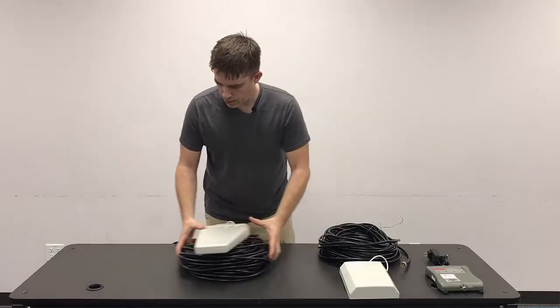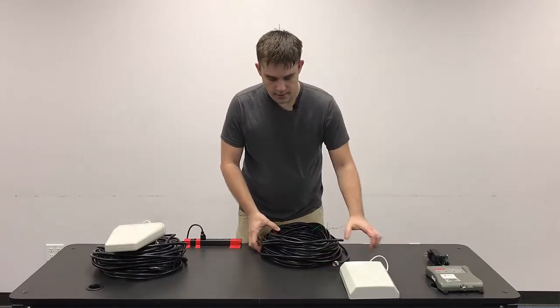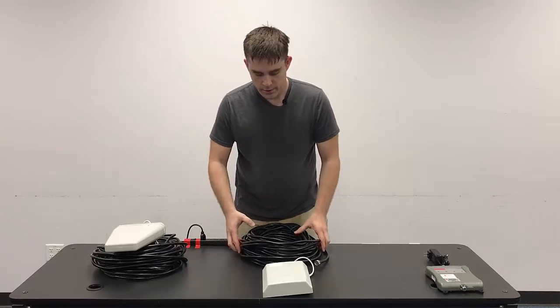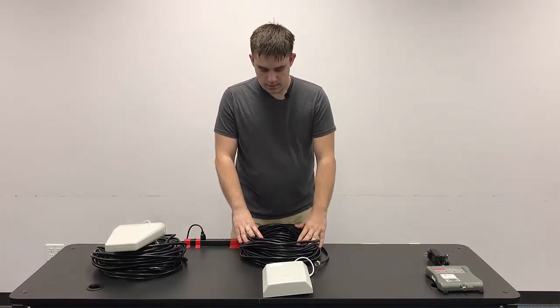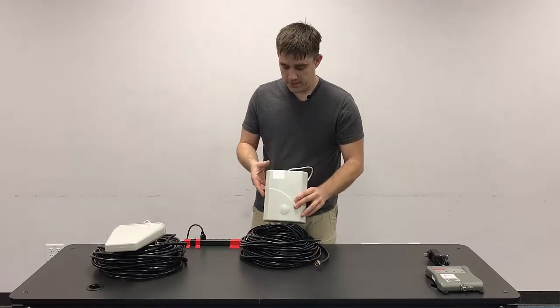Once the outdoor antenna is set up, you'll move inside and choose an appropriate location for the indoor antenna. We're going to use the second piece of coax and then the indoor antenna. And in the DTP...